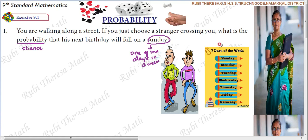How many days are there in a week? Seven days are there in a week. Starting from Sunday and ending with Saturday: Sunday, Monday, Tuesday, Wednesday, Thursday, Friday, Saturday.